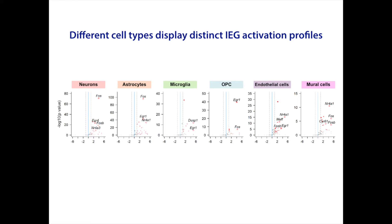Interestingly, different cell types appear to display distinct IEG activation profiles following seizure, with different IEGs showing varying degrees of changes across cell types. This demonstrated the ability of X-Seq to robustly capture acute gene expression changes in both neurons and non-neuronal cells.